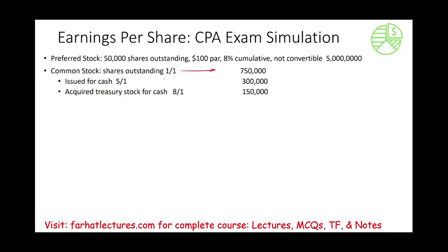We had 750,000 shares outstanding from January 1st up to May 1st, so I have to prorate them — they were outstanding for January, February, March, and April, which is 4 out of 12 months. Then on May 1st, we added 300,000 shares, bringing the total to 1,050,000 shares. Those shares were outstanding for May, June, and July — 3 out of 12 months — before something happened in August.